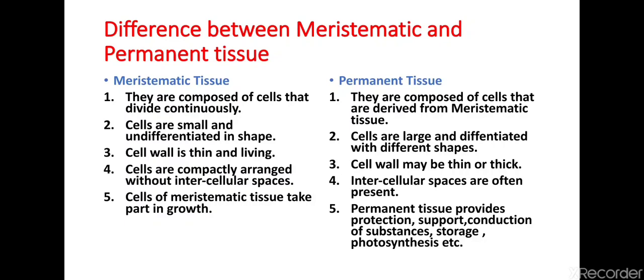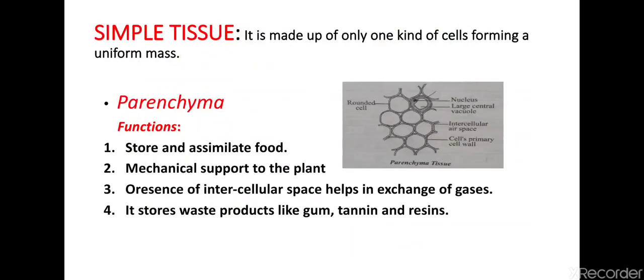In meristematic tissue the cell wall is thin and living, whereas in permanent tissue the cell wall may be thin or thick. In meristematic tissue cells are compactly arranged without intercellular space, whereas in permanent tissues intercellular spaces are often present. Cells of meristematic tissues take part in growth, whereas permanent tissues provide protection, support, conduction of substances, storage, photosynthesis, and so on.